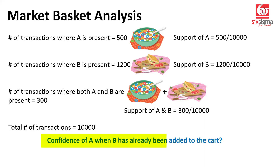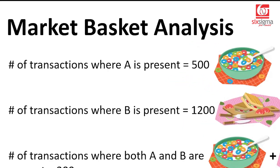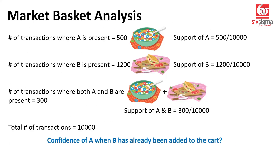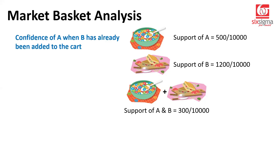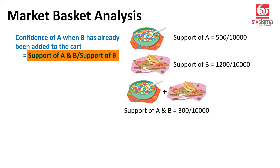The question that comes is: what is the confidence of A when B has already been added to the cart? So we are trying to understand something known as market basket analysis, which essentially focuses on the items that are frequently bought together. If you have information that item B has already been added to the cart, how confident are you that the customer would also be buying item A, given B is already present in the cart? To solve this, we'll have to use the information that's already available. Confidence of A given B is support of A and B divided by support of B.